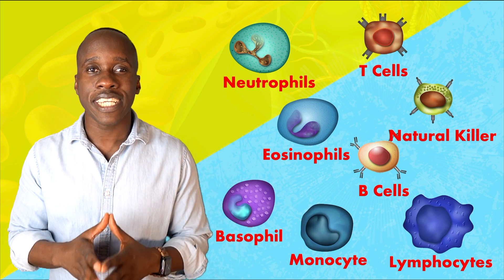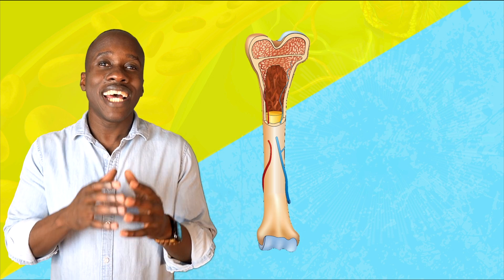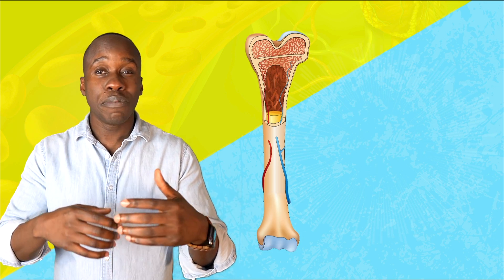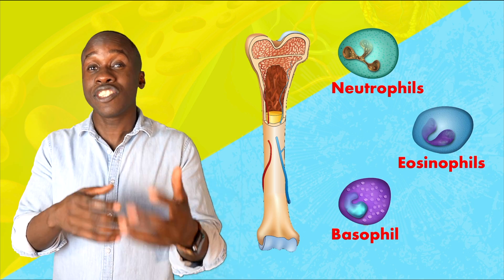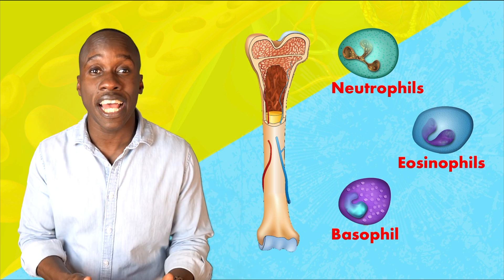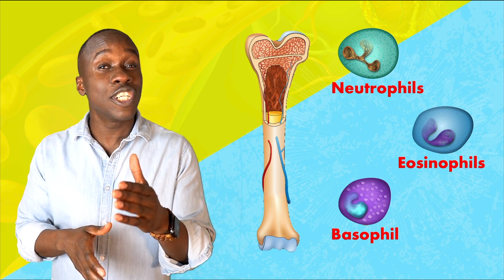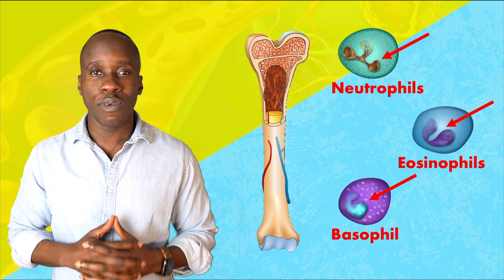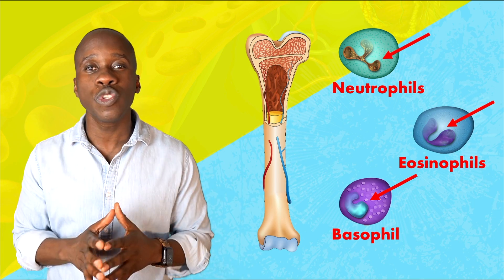Let's dig into the granular leukocytes first. These cells are all produced in the red bone marrow, and they live for a very short period of time - it can be hours or days, which is very short compared to the 120 days that red blood cells can last. When you look at them, you'll notice something very peculiar about their nucleus: they actually have lobes. That's another distinguishing characteristic. The most common of the three types of granular leukocytes are the neutrophils.